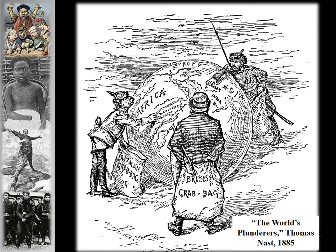A Thomas Nast cartoon from 1885, after the Berlin Conference, showed all these different nations grabbing territory — Germany's grabbed bag, Britain's grabbed bag, Russia's grabbed bag — all grasping at territories and putting them in their bags.